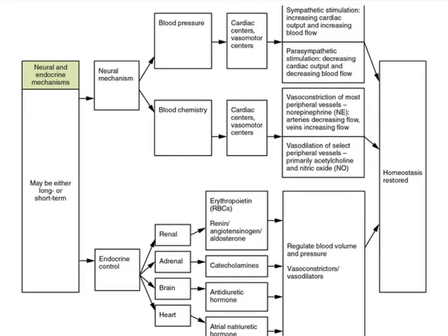Here we see a rather comprehensive flowchart. I'm not going to go over all the details — I suggest you do, as it'll be great practice. Notice that we're looking at this flowchart from the perspective of neural and endocrine mechanisms, which may be either short or long term. Typically neural mechanisms are short term and endocrine mechanisms are long term. When it talks about blood chemistry, that's what involves the chemoreceptors, though they function very similarly to the baroreceptors in regulating blood pressure — they just respond to different stimuli.